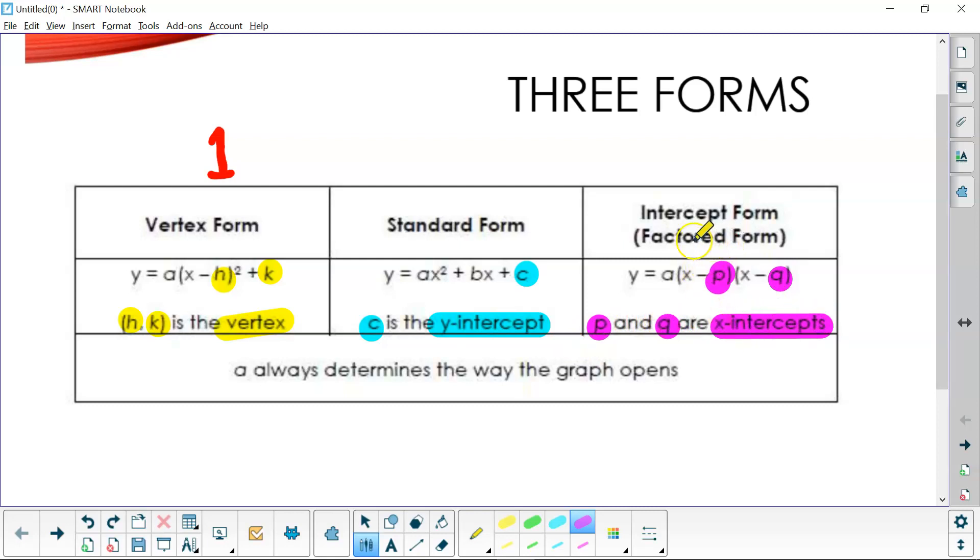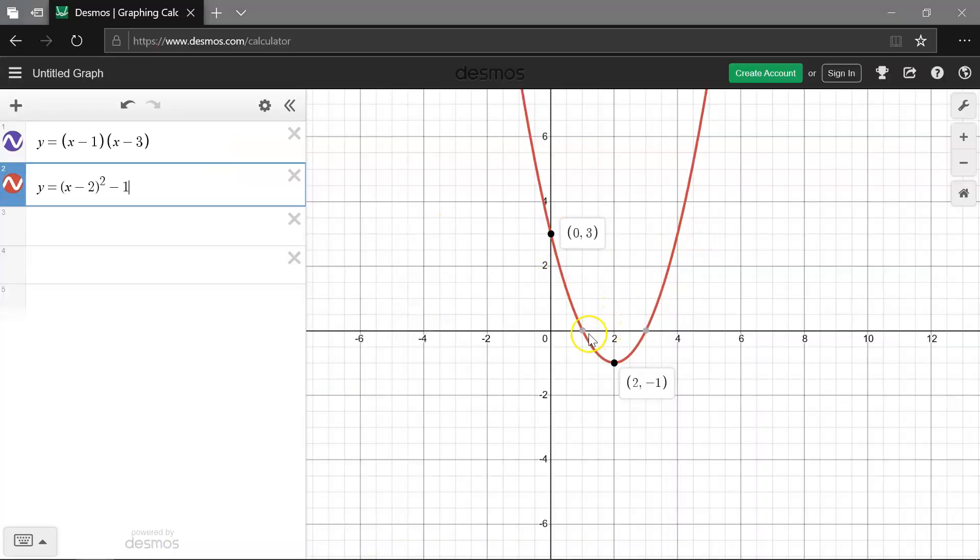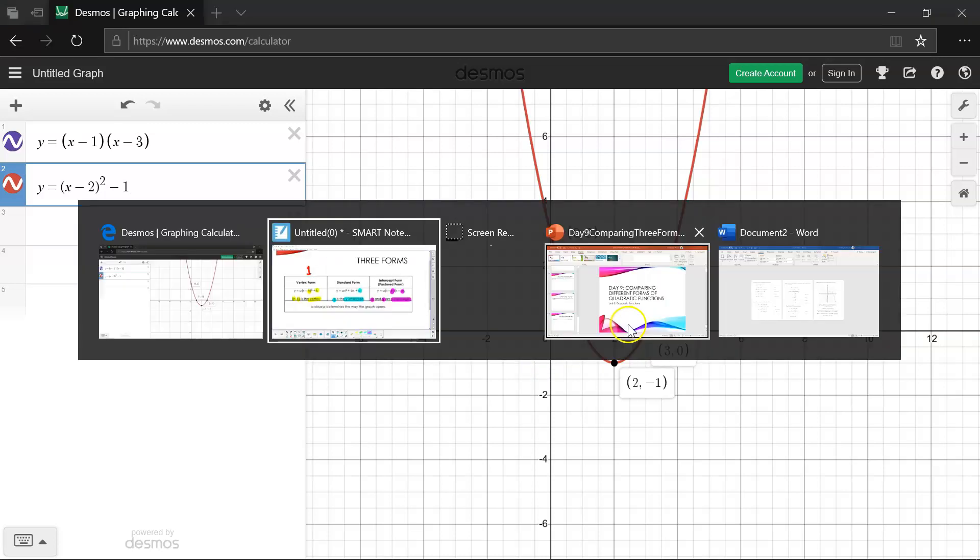Let's go over to Desmos and look at a graph. Here's your p, this graph is at (1, 0) and (3, 0). So these would be your x-intercepts. Notice how your y value must be 0 where the graph crosses the x-axis.